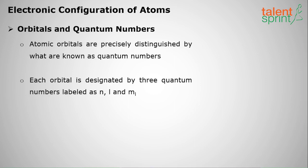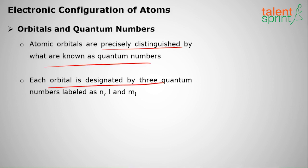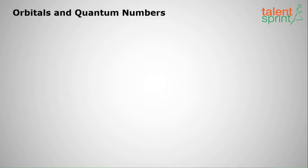First, what do we mean by orbital? Orbital means the place where atomic particles like electrons, protons, and neutrons are present. Atomic orbitals are precisely distinguished by numbers called quantum numbers. Each orbital is designated by three quantum numbers labeled as n, l, and ml.